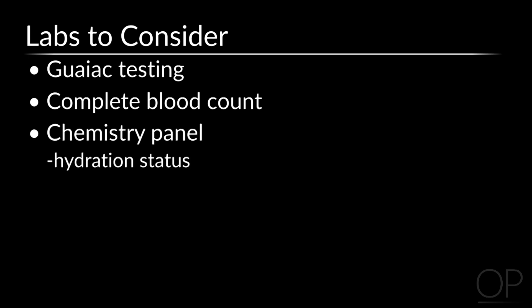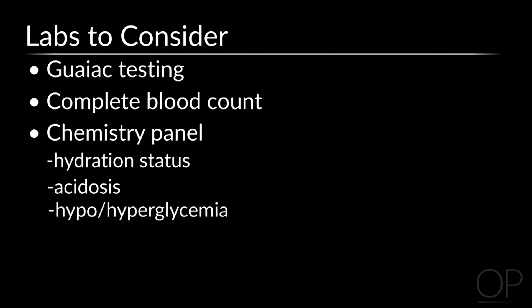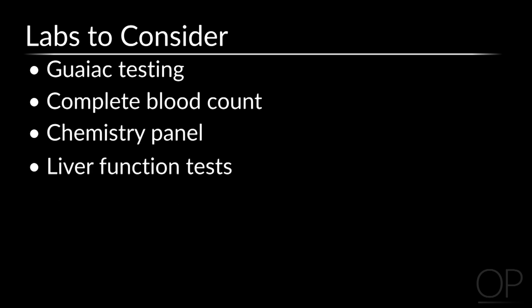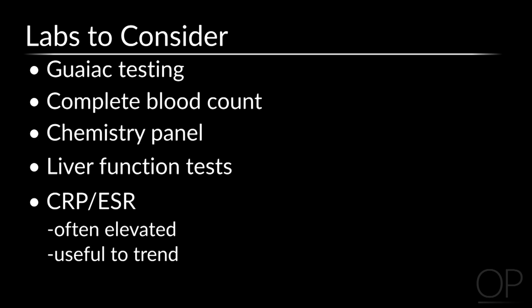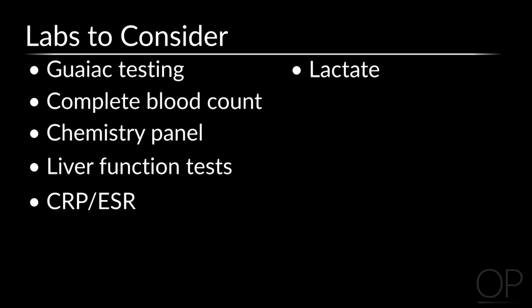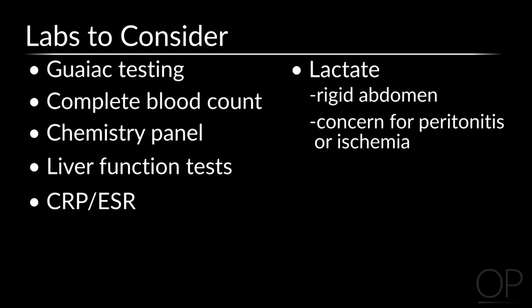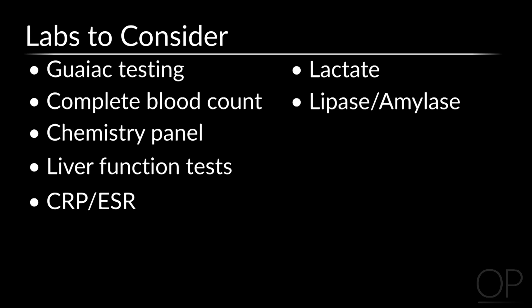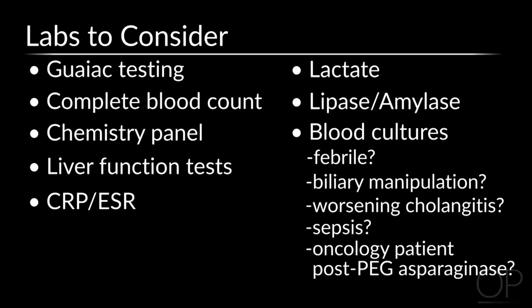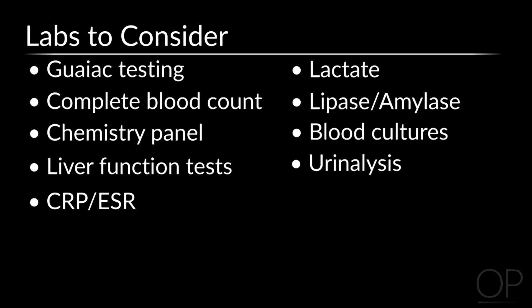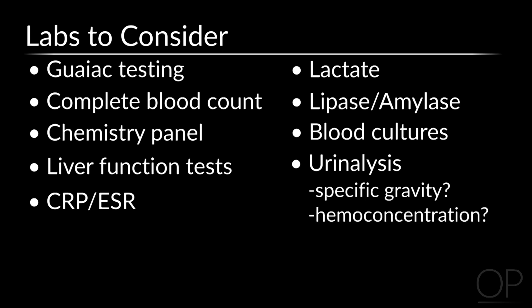A chemistry panel will give you a sense of their hydration status or whether or not they're acidotic, and it can also tell you if they're hypo- or hyperglycemic. LFTs are important and can be trended to see if they're worsening or if they have any evidence of cholestasis. A CRP and ESR are often elevated in acute pancreatitis and are most useful if you trend them to see if the patient is getting worse or better. A lactate can be sent if a patient has a rigid abdomen or you have a concern for peritonitis or ischemia. The lipase and amylase are helpful if you haven't already made a diagnosis of pancreatitis. Blood cultures are important if the patient is febrile, and could be concerning if the patient has had biliary manipulation. Finally, a urine analysis can allow you to have a specific gravity, which gives you a sense of their hemoconcentration or intravascular volume.